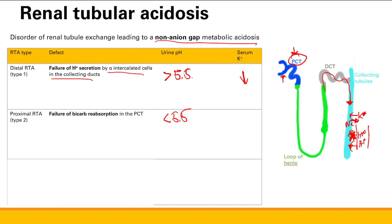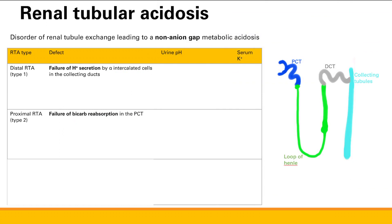What will potassium levels be in proximal RTA? If there's failure of bicarb reabsorption in the proximal convoluted tubule, you also have decreased sodium reabsorption — because bicarb and sodium go together. So there's increased sodium reaching the collecting duct. As always, sodium goes in and potassium goes out, giving you decreased serum potassium — hypokalemia.